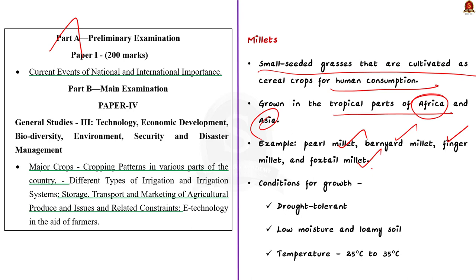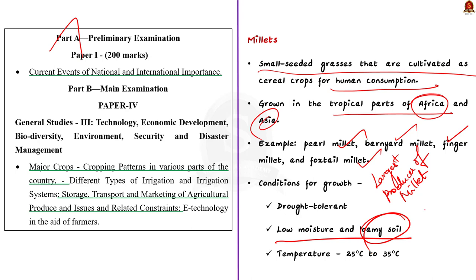Regarding growing conditions: millets are drought tolerant, adapted to warm weather, and require low moisture and loamy soil. They don't grow well in waterlogged or extremely dry soil. They are warm-season crops, preferring temperatures ranging from 25°C to 35°C, adapted to tropical and subtropical regions. Millets have gained popularity as a source of nutrition recently. Firstly, they offer a range of nutritional benefits comparable to major food crops and in some cases even surpass them. Secondly, millets are known for their ability to thrive in harsh, resource-poor conditions, making them excellent for regions facing environmental challenges and food security issues.